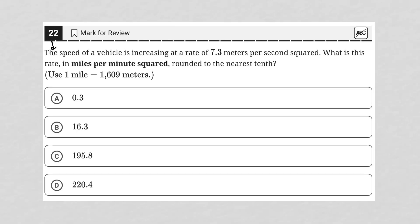This question says the speed of a vehicle is increasing at a rate of 7.3 meters per second squared. That's an acceleration. I'm going to write this down. So you have 7.3 meters per second squared. What is this rate in miles per minute squared?